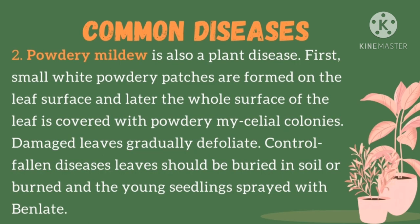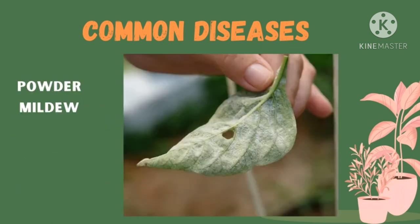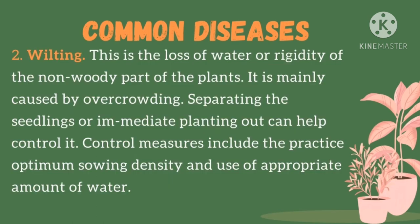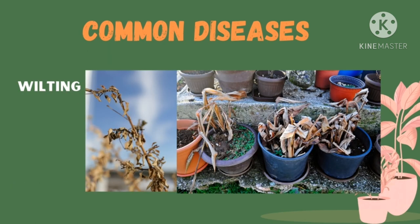Next is powdery mildew. It is common on many plants and easily recognized, caused by a variety of closely related fungal species. Low soil moisture combined with high humidity levels at the plant surface favors this disease. Wilt is a common symptom of plant disease resulting from water loss in leaves and stem. Affected parts lose their turgidity and droop.